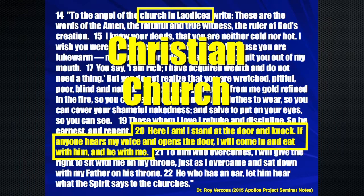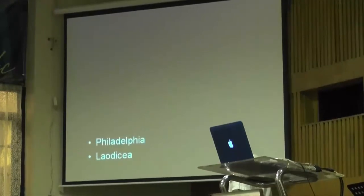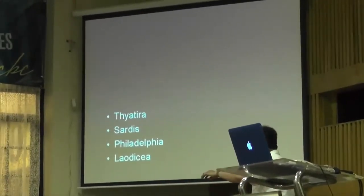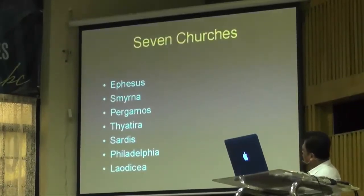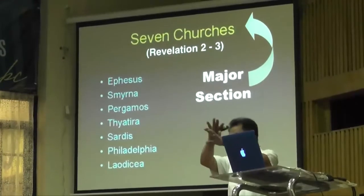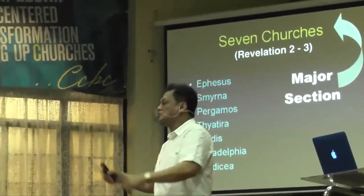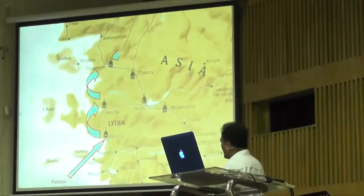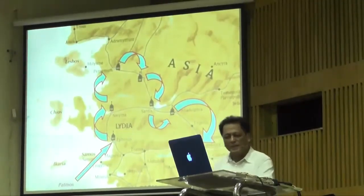Another sample. The major section can be the whole chapter or two chapters. Starting with verse 14 you have Laodicea; before Laodicea is Philadelphia, then Sardis, Thyatira, Pergamos, Smyrna, and Ephesus. Starting with chapter 2, you have the seven churches — that's the major section. Revelation 2 and 3 are the same context: the whole two chapters are about Christ evaluating the churches, with commendations and recommendations. Geographically, from Patmos, the writer was asked to write to these churches: Ephesus, Smyrna, Pergamum, Thyatira, Sardis, Philadelphia, and Laodicea.